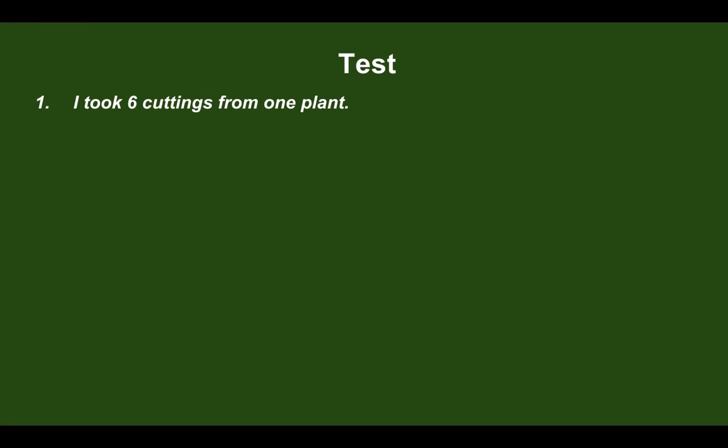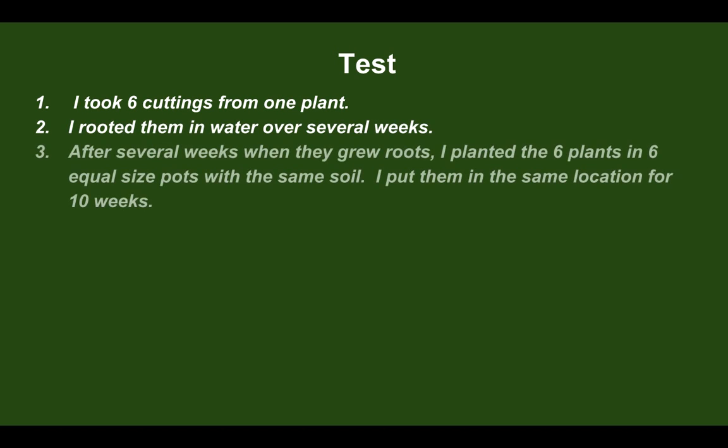Show your test step-by-step. First, I took six cuttings from one plant and rooted them in water over several weeks. When they grew roots, I planted the six plants in six equal-sized pots with the same soil and put them in the same location for ten weeks.